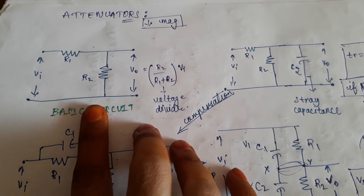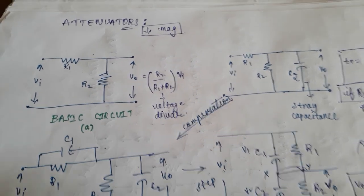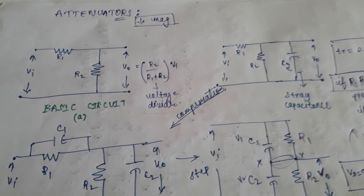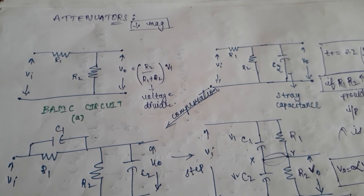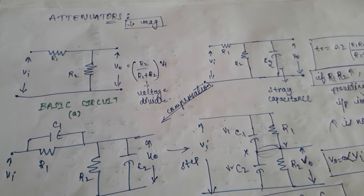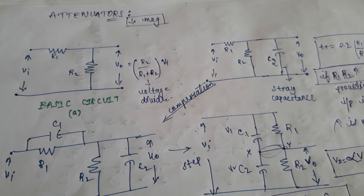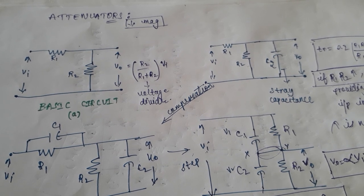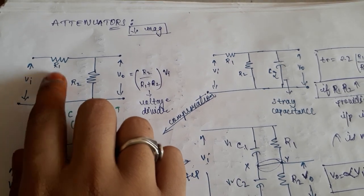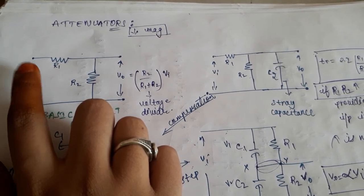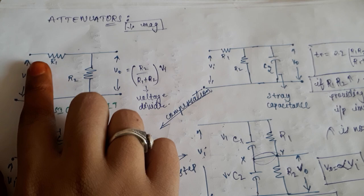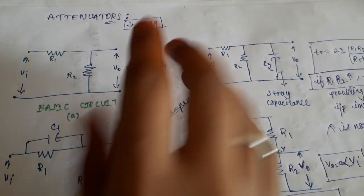Today we are going to study about attenuators. Attenuators are circuits which are basically used to reduce the magnitude of the input signal. These are connecting circuits between two systems — the input generator and, for example, an amplifying stage. The amplifier cannot accept high input voltages, so we attenuate the signal, reducing its magnitude to some extent, and then give that reduced magnitude to the amplifying stage.